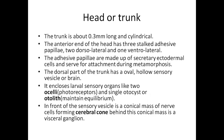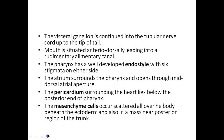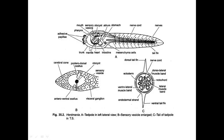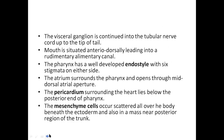The ocelli, as the name suggests, are photoreceptors. The otocyst (with the otolith) helps in maintaining balance and equilibrium. Towards the anterior region there is the conical cerebral cone. From the visceral ganglion, a tubular nerve cord continues up to the tip of the tail, so the visceral ganglion extends the full length of the tail as the nerve cord.